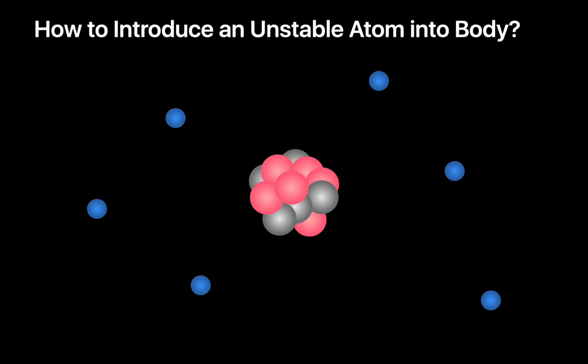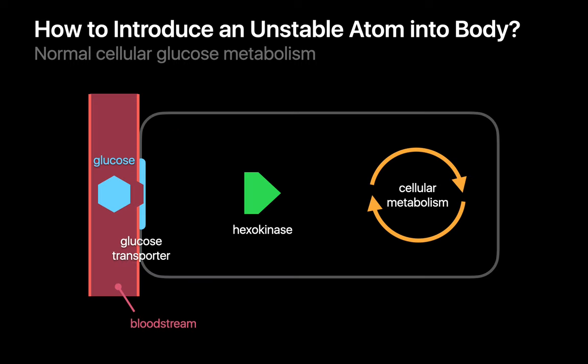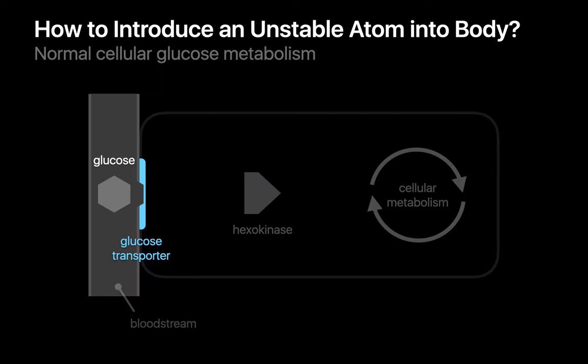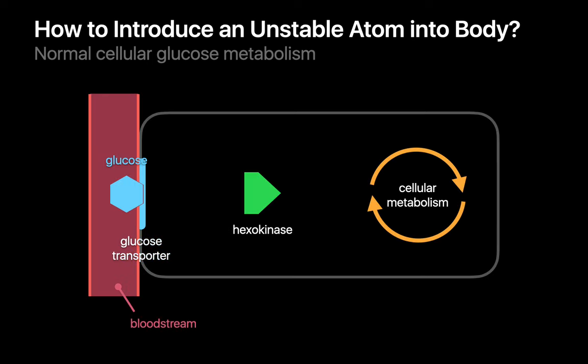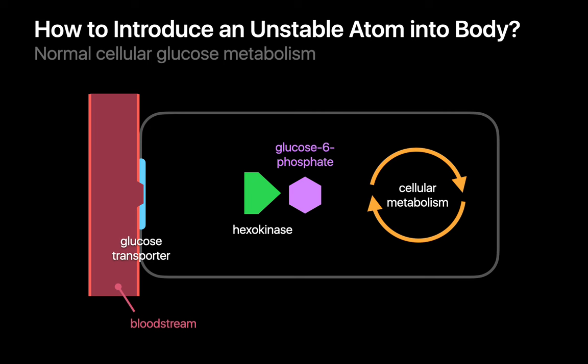So, how do we get these unstable atoms or radionuclides into the body and to preferentially accumulate in environments that have specific clinical relevance? The most common method relies on the normal mechanisms that cells in the body use to metabolize glucose. Special proteins in the cell membrane called glucose transporters move glucose molecules from the bloodstream and into the cell. Once inside the cell, the glucose molecule is immediately phosphorylated by an enzyme called hexokinase.